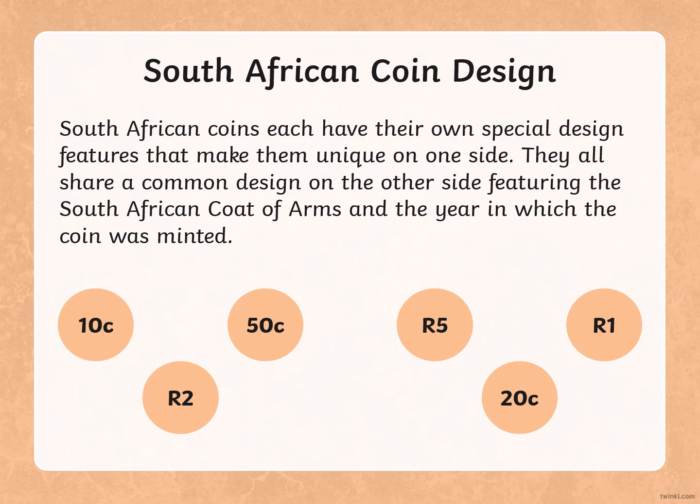South African coin design. South African coins each have their own special design features that make them unique on one side. They all share a common design on the other side, featuring the South African coat of arms and the year in which the coin was minted. Minted means made out of metal.